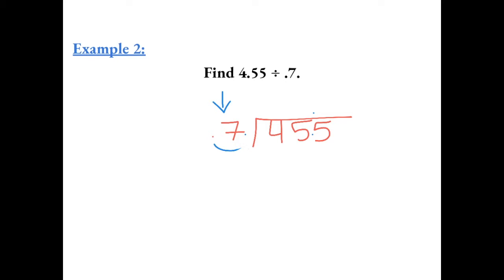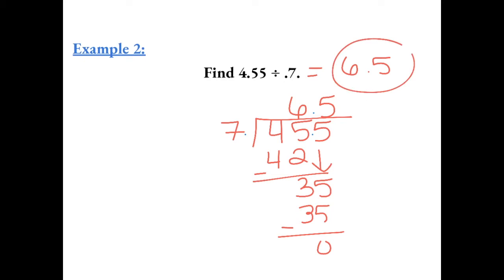Now we're going to divide as we normally would. 7 goes into 45 six times which equals 42. Subtract and we have 3, bring down the 5. 7 goes into 35 five times, 7 times 5 is 35. So now we have a final answer of 6.5.